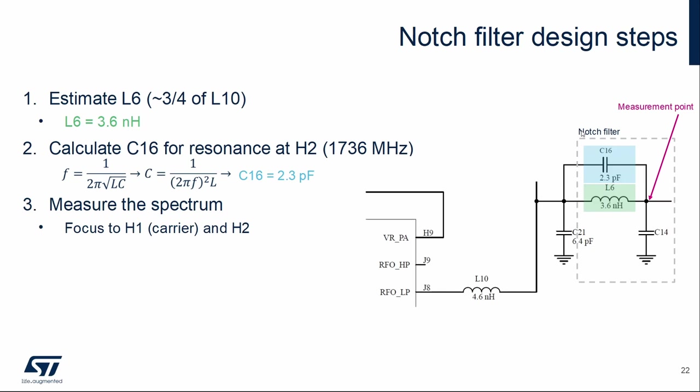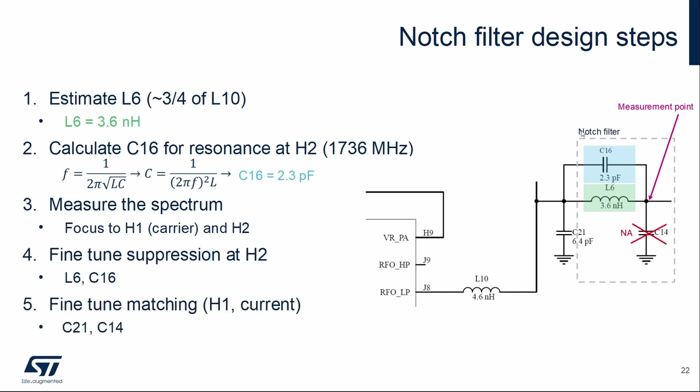Then we can measure the spectrum after the filter. We should check the level of the carrier and the second harmonic. If the suppression is not enough, we can fine-tune values L6 or C16. This stage loads the previous stage and may detune it. Based on the carrier and current measurement, as in the previous stage, we can fine-tune values C21 or C14 to set the optimum load impedance again. In this case, C21 was not modified and C14 was not used.